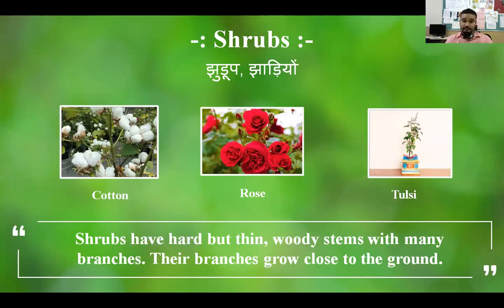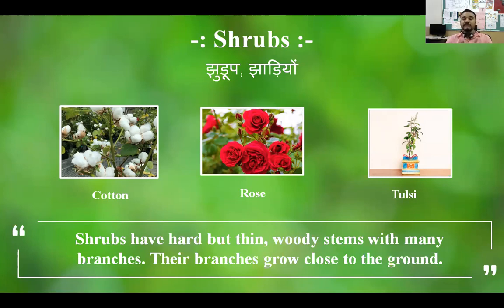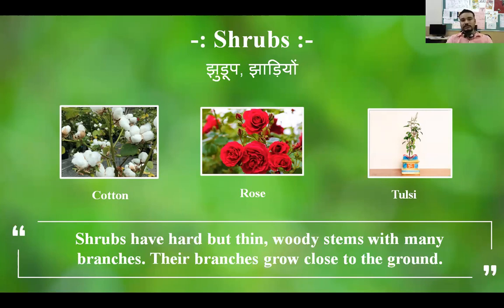The third type of plant is shrubs. In Marathi it is called 'Jhudup' and in Hindi it is called 'Chadiya'. You might have seen rose plants or the very important Tulsi plant — it is in front of many homes. Shrubs are small plants with a very hard and thin stem, and their branches grow close to the ground. Examples include rose, cotton, and Tulsi plants. Shrubs have a hard, woody, thin stem and many branches.